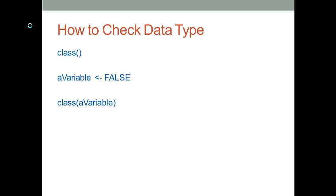Some of you may wonder: given a variable, how do I know what type it is? In R, we use the class() function to determine the type of a variable. For example, create a variable called aVariable and assign FALSE to it, making it a logical variable. Then pass aVariable into the class() function and R will tell you what type it is.